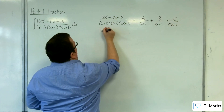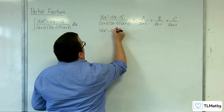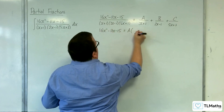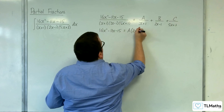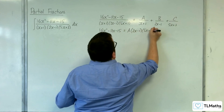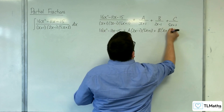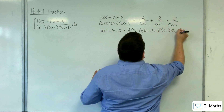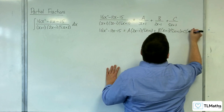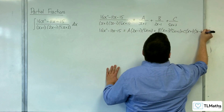So, multiplying through by the denominator, 16x squared, take away 11x, take away 15, will be equivalent to A times 2x minus 1, times 5x plus 3, plus B lots of x plus 1, times 5x plus 3, plus C lots of x plus 1, times 2x minus 1.